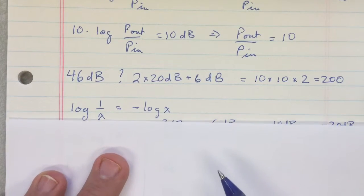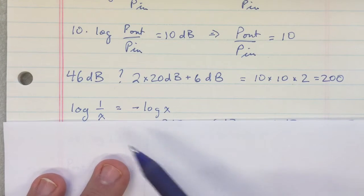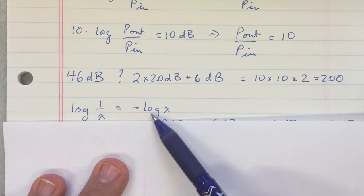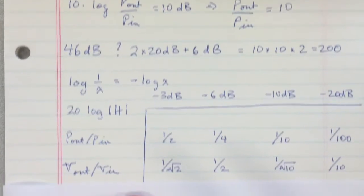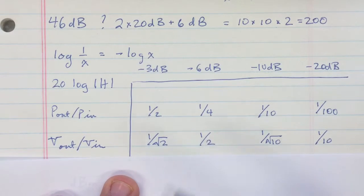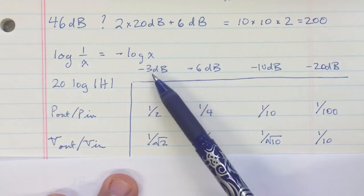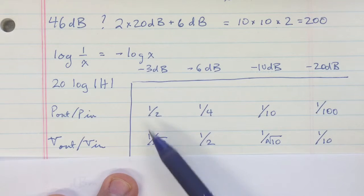All right, so once you've done a few of those, you get used to it. On the attenuation side, you use the fact that the log of the reciprocal is equal to minus the log. And so you can make a similar table up for negative decibel values. In each case, it's just like our table before, but it's one over.